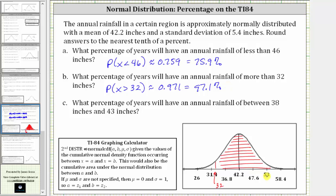And then for part C, what percentage of years will have an annual rainfall of between 38 inches and 43 inches? Which we could indicate as the probability that X is greater than 38 and less than 43. Where 38 is approximately here, and 43 is approximately here. So now we're looking for the area between these two values.